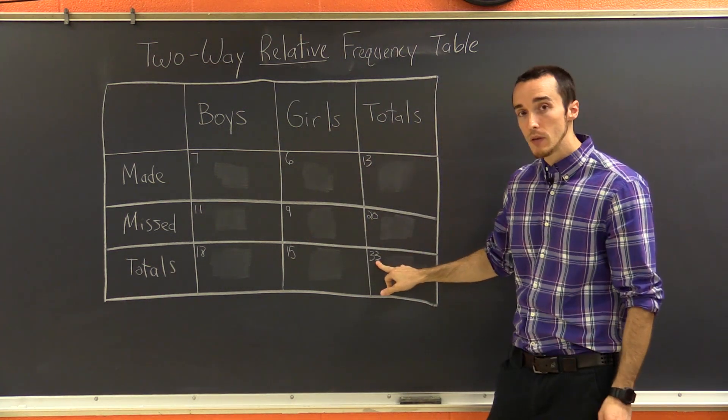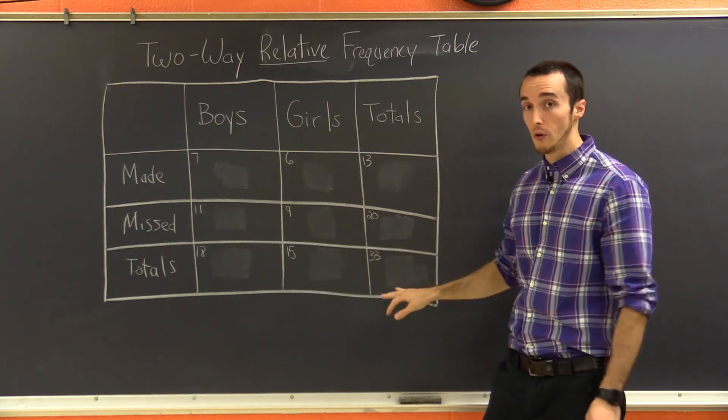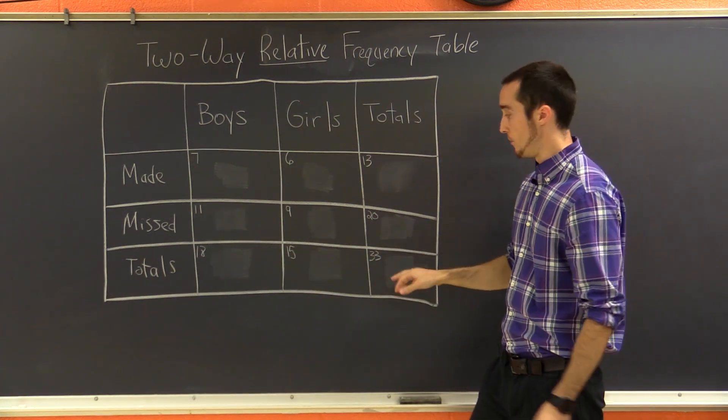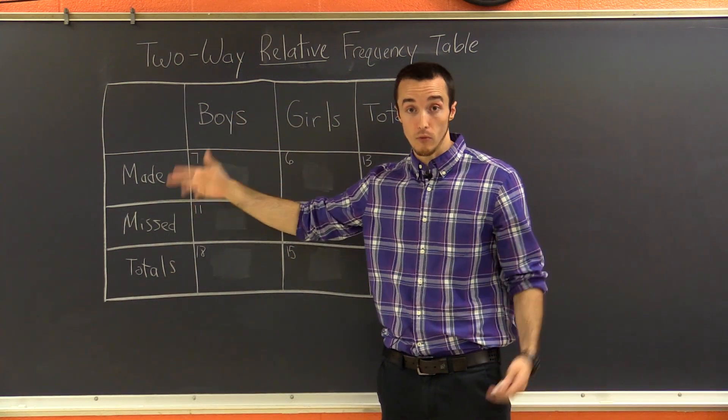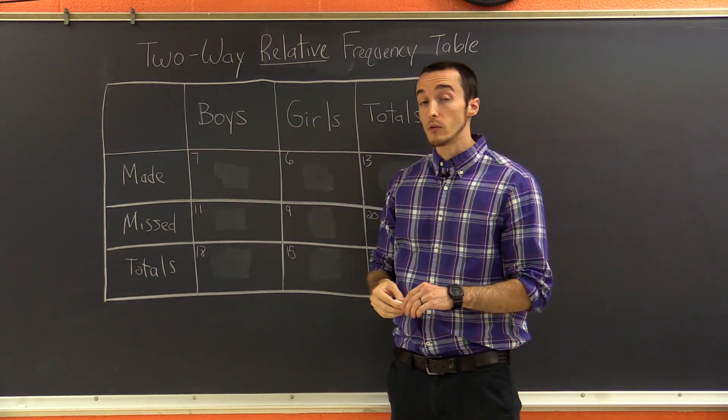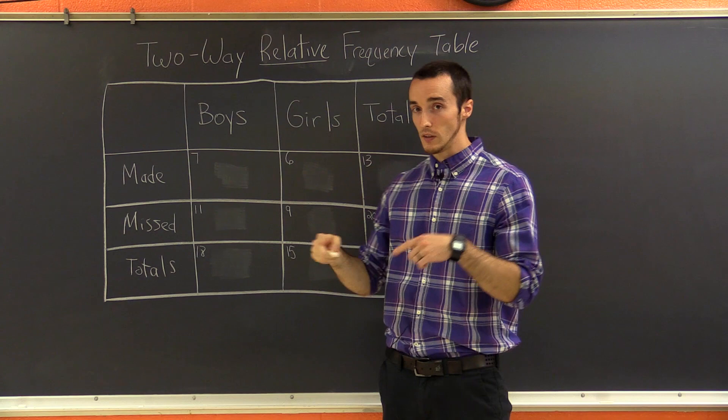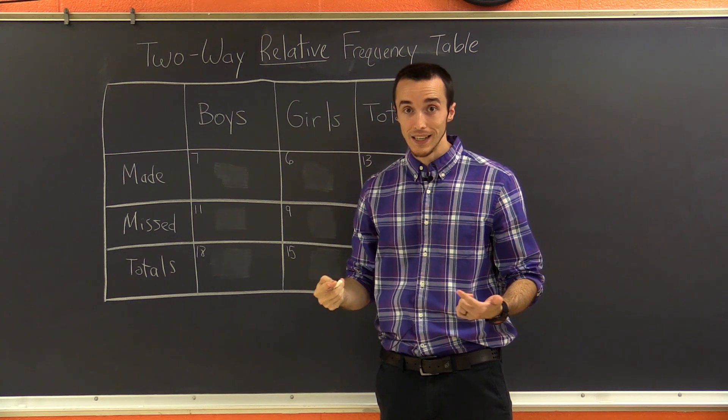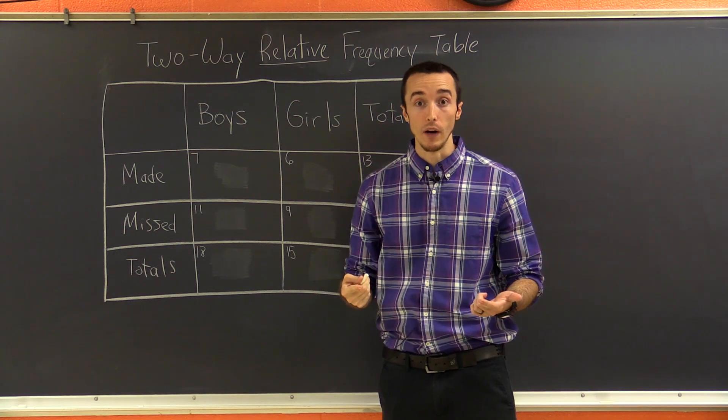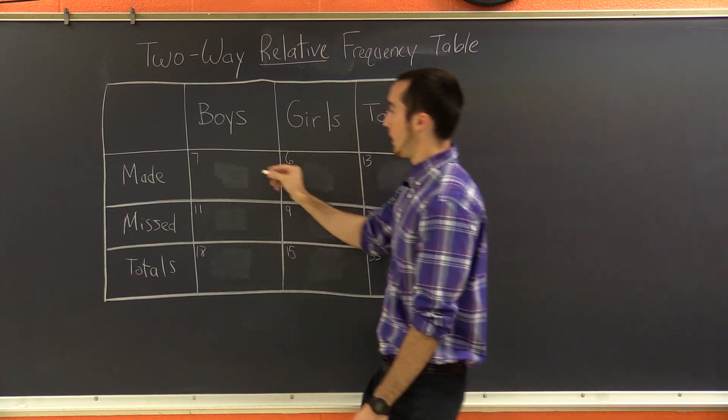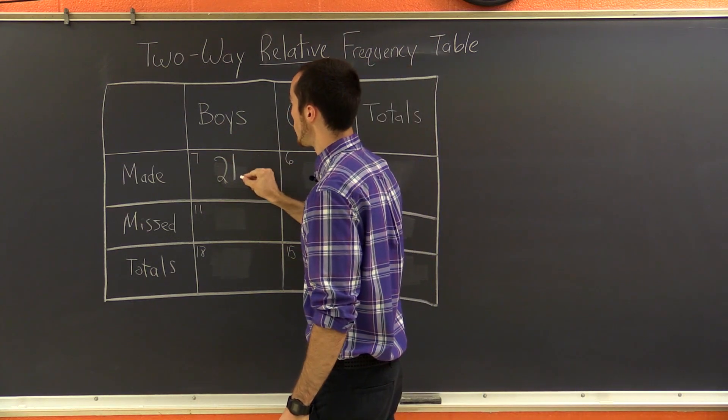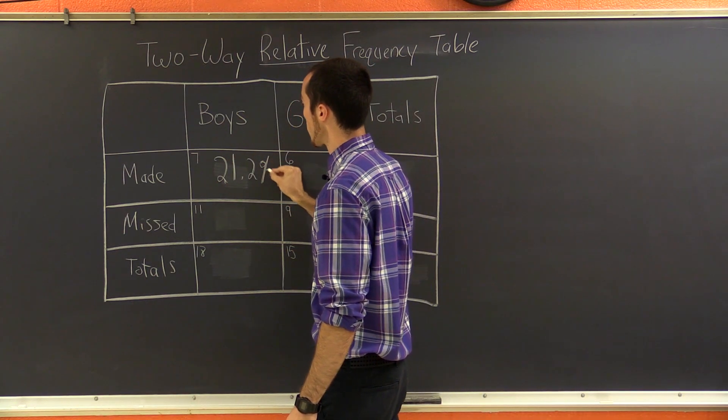There were 33 people. That was our grand total. There were 33 students in the room, and seven of them were boys who made a basket. So to get a percentage, all we have to do is seven divided by 33, and then times that number by 100. So I got 21.2%.